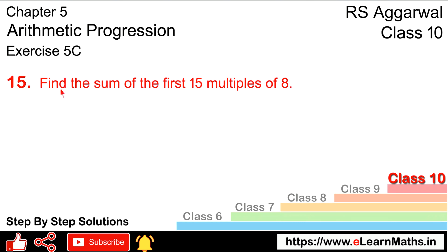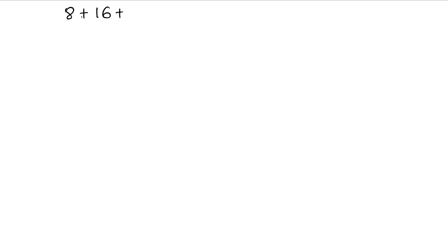Let's do question number 15 of exercise 5C, that is arithmetic progression. Question number 15 is: find the sum of the first 15 multiples of 8. So we need to find the sum of the first 15 multiples of 8. The first multiple of 8 is 8, the second is 16, the third is 24, and so on. We need the first 15 multiples, so n is 15.